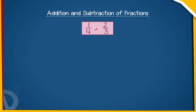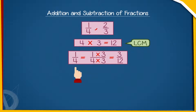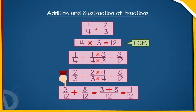We will now add two unlike fractions, that is, fractions with different denominators. Let us add 1 by 4 and 2 by 3. Before adding, we convert them into like fractions by finding the LCM of their denominators 4 and 3, which is 12. Then, 1 by 4 equals 3 by 12, and 2 by 3 equals 8 by 12. So, 3 by 12 plus 8 by 12 equals 11 by 12.